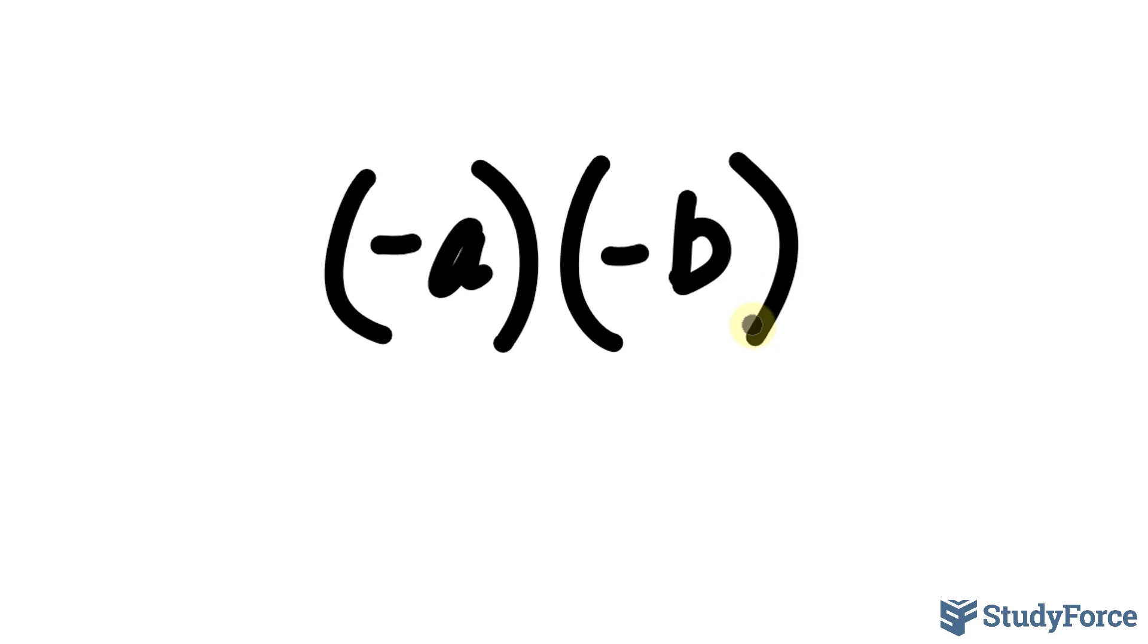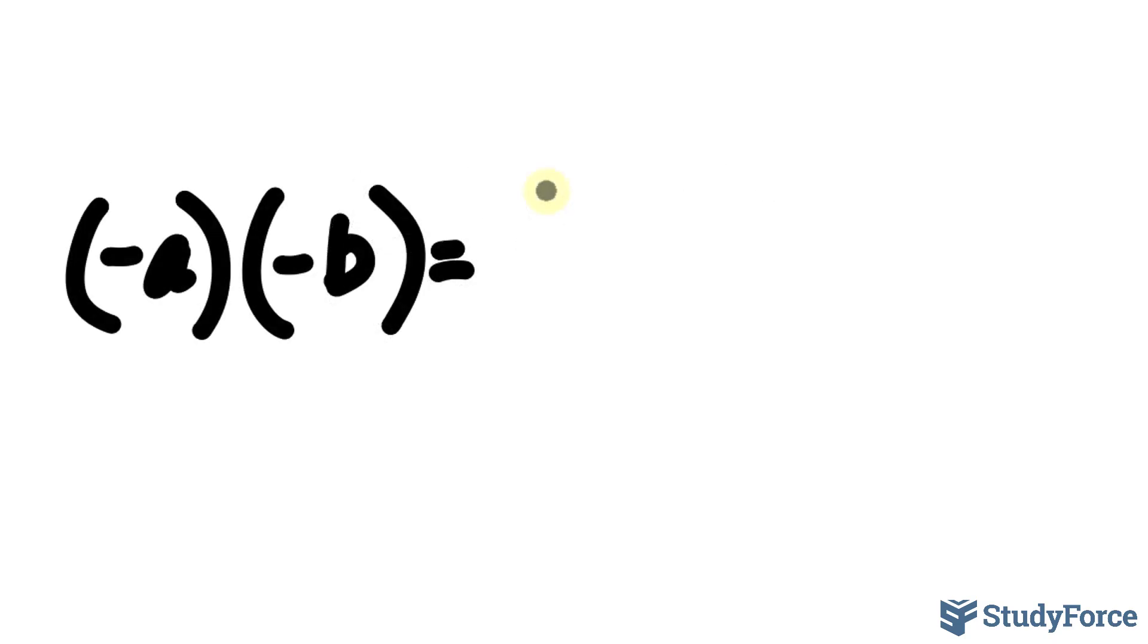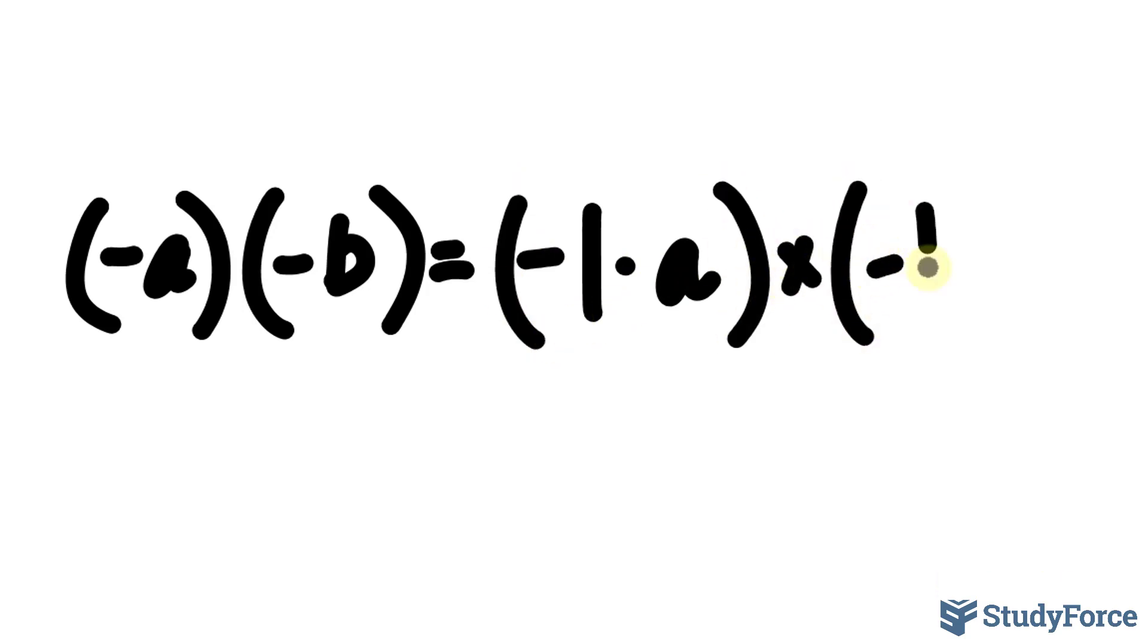We will now rewrite the negative factors as the product of their positive counterparts multiplied by negative one, where we have negative a times negative b equals negative one times a multiplied by negative one times b.